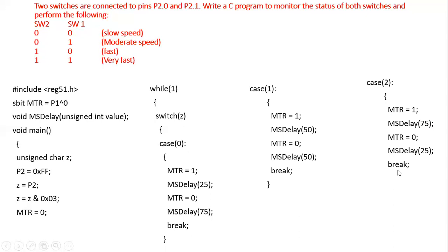For the last case — binary 1-1 — using the default construct, the motor runs at high rated speed. Logic value one means full supply voltage (5V) is applied. By using switch-case statements, we can write a program to rotate the motor at different speeds by generating pulses of different duty cycles through pin P1.0. Thanks for watching.